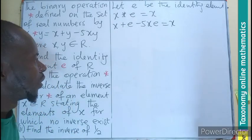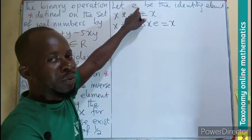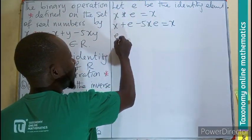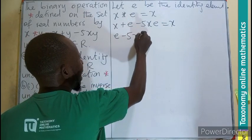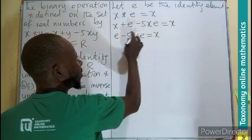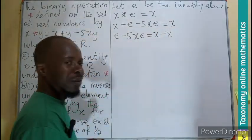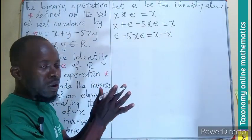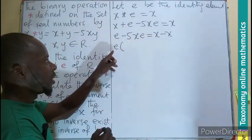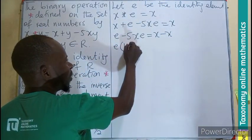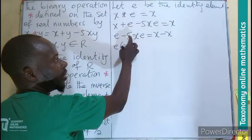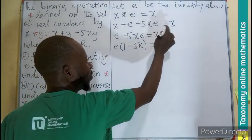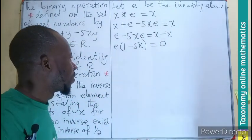Now we are focusing on e, which is the identity element. So we keep the e and send all other terms away. Meaning e minus 5xe equals x minus x. So we factorize. E times 1 minus 5x equals 0.